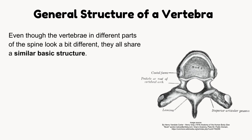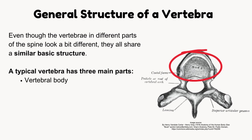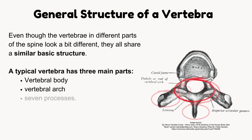General structure of a vertebra. Even though the vertebrae in different parts of the spine look a bit different, they all share a similar basic structure. A typical vertebra has three main parts: the vertebral body, the vertebral arch, and 7 processes. Let's talk about their details.